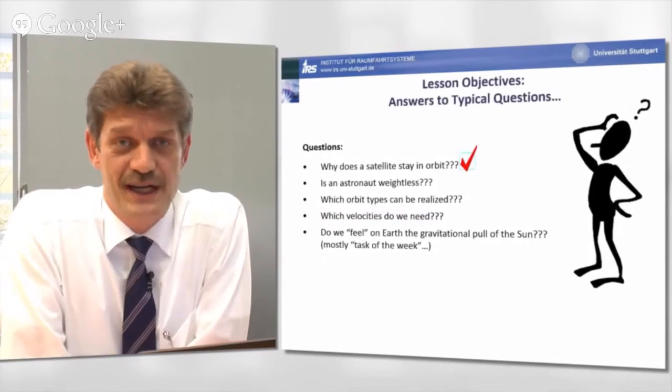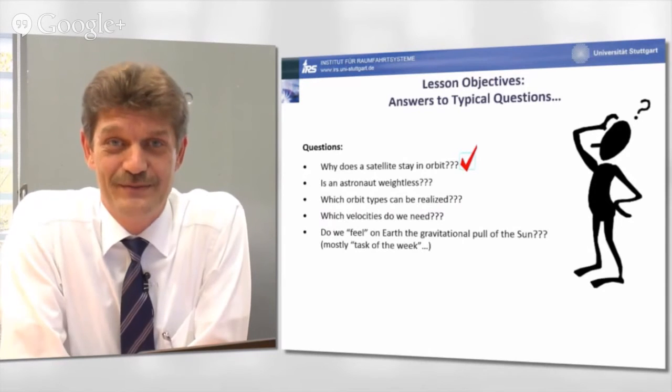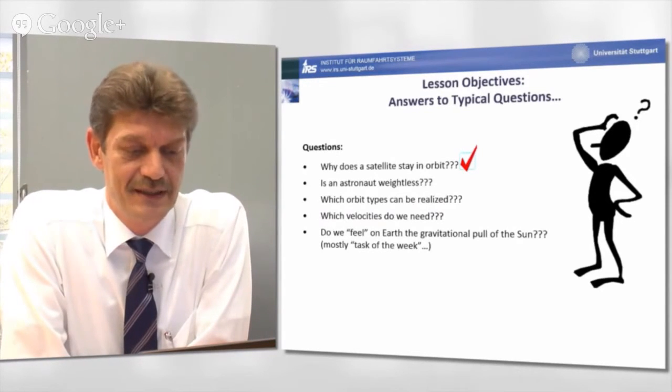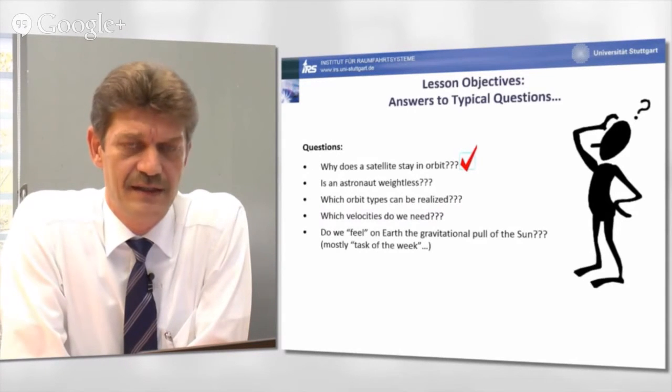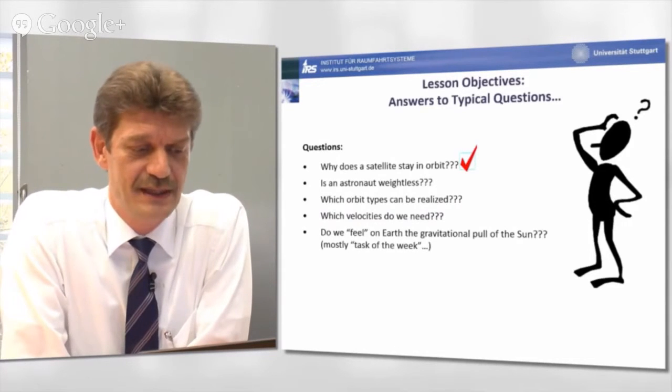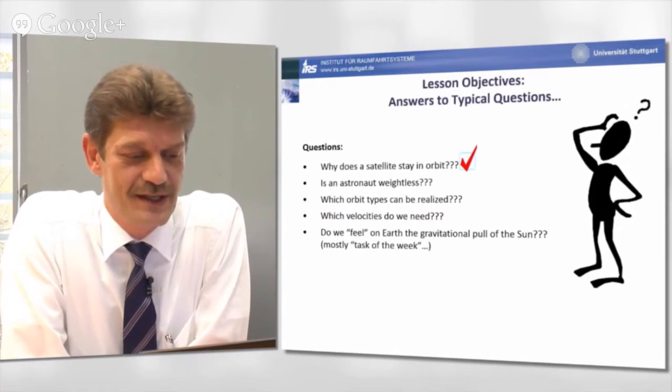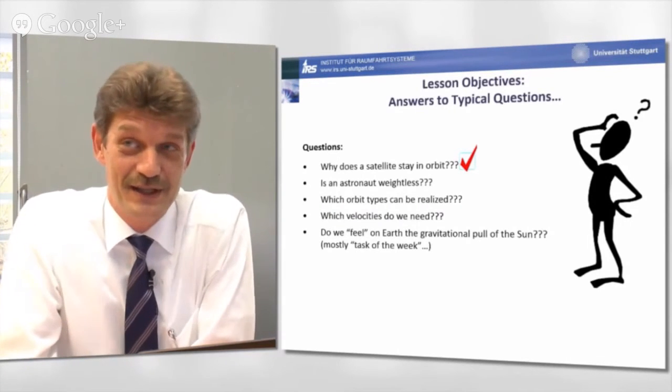So, the first answer is easily given. Why does a satellite stay in orbit? Because of its own velocity relative to the gravitational pull acting on the satellite. And now you can easily answer also the second question. Is an astronaut weightless?